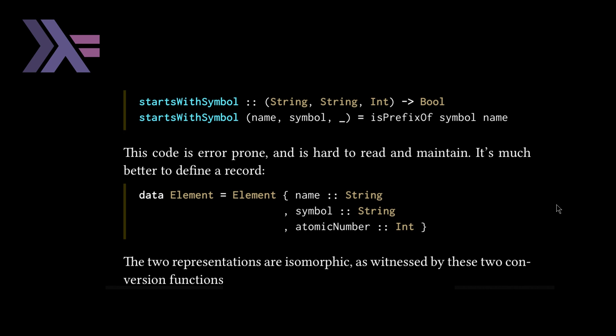From here, we'll move on to the third subsection, sum types. So this is the duality or the dual of product types. It says just as the product in the category of sets gives rise to product types, the co-product gives rise to sum types. The canonical implementation of a sum type in Haskell is the following. So here we have an either and then two constructors left and right. So we've been seeing either in the last couple of chapters. And this is how you define it. It's a super minimal syntax. It's one of the reasons I love Haskell. And it's generic. So it's basically saying that we've got two generic types a and b that correspond to left and right.